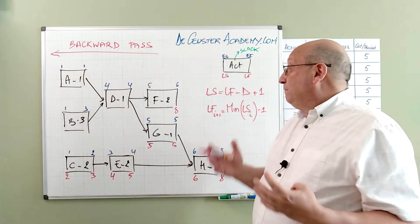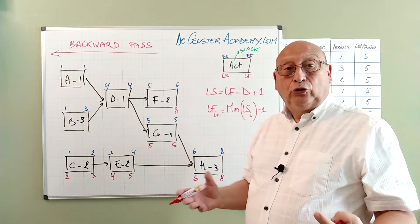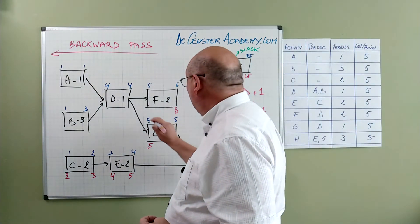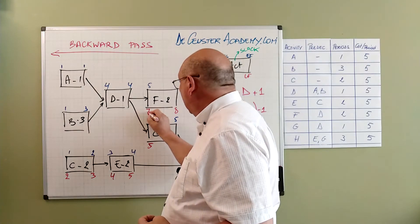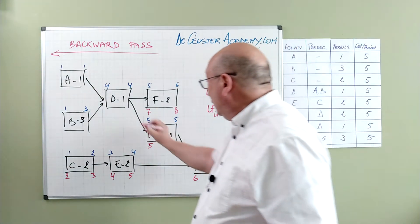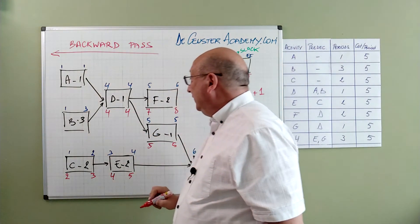So F can finish until period 8. It will not change anything to the project duration. We calculate back. So we find here 8 minus 2 plus 1 is 7. We have 5 and 7. We take the lowest value. So we have 4. 4 minus 1 plus 1 is 4.